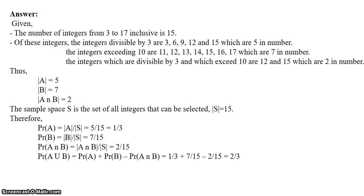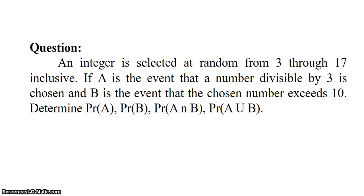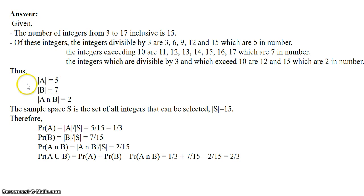The integers which are divisible by 3 and also exceed 10 are 12 and 15. These are the numbers which are divisible by 3 and greater than 10, so the count of these numbers is 2. Event A is the event that a number is divisible by 3, therefore the count of A — the possible outcomes of event A — is 5.